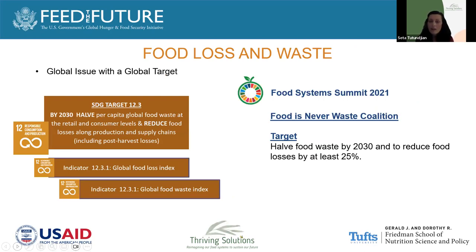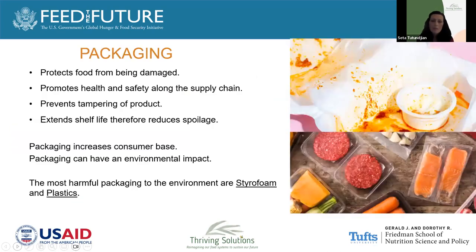We have a global target on food loss and waste — target 12.3 — which we will cover in our next webinar. We do have a global index for food loss and a global index for food waste, and both are indexes that countries are required to report on in the coming years. The second pillar is packaging. Packaging is very important to reduce food loss because it protects food from being damaged, prevents tampering, promotes health and safety by extending shelf life, and ensures the safety of the food.